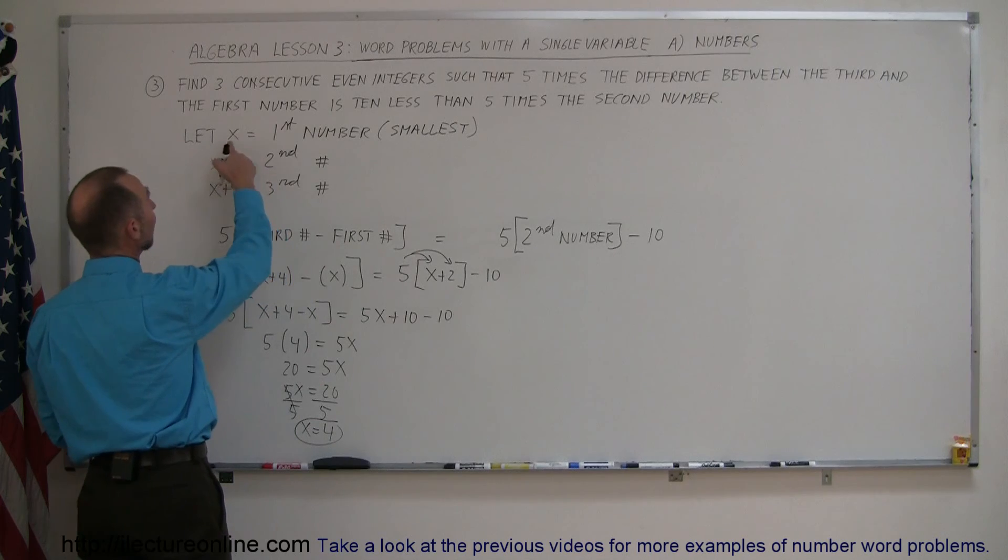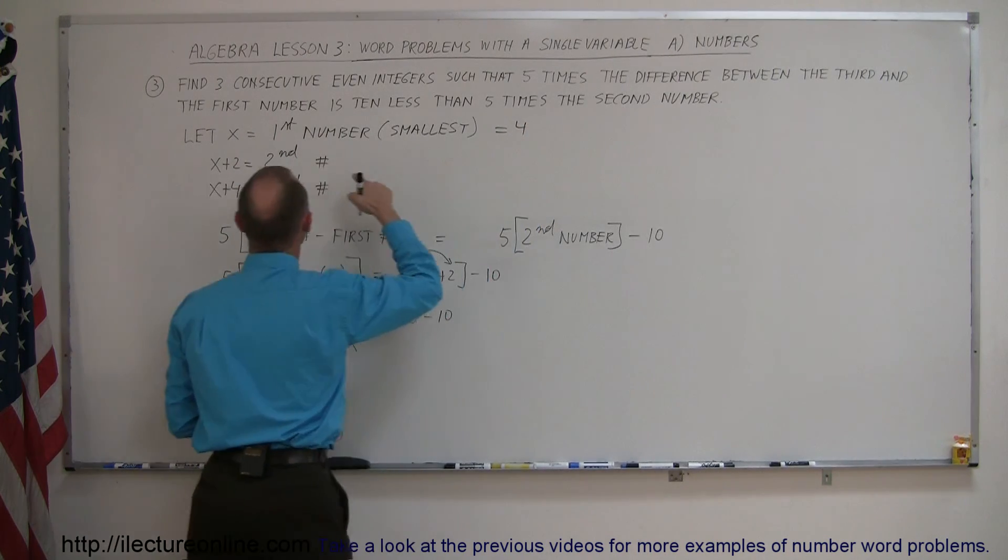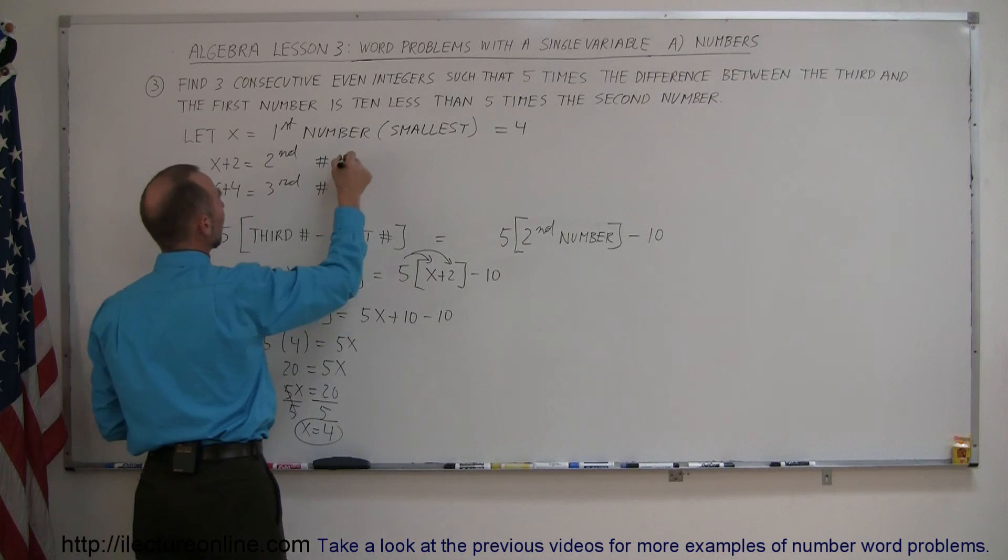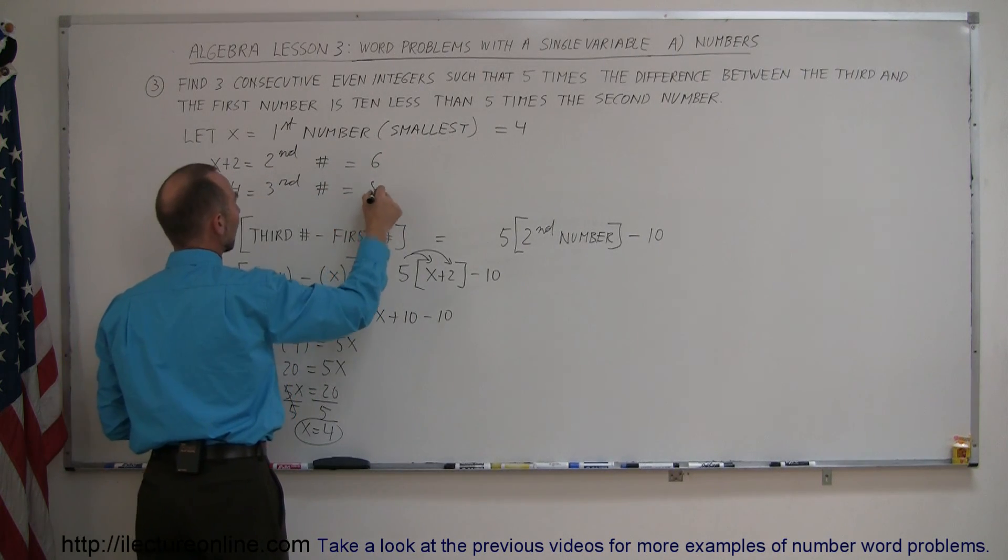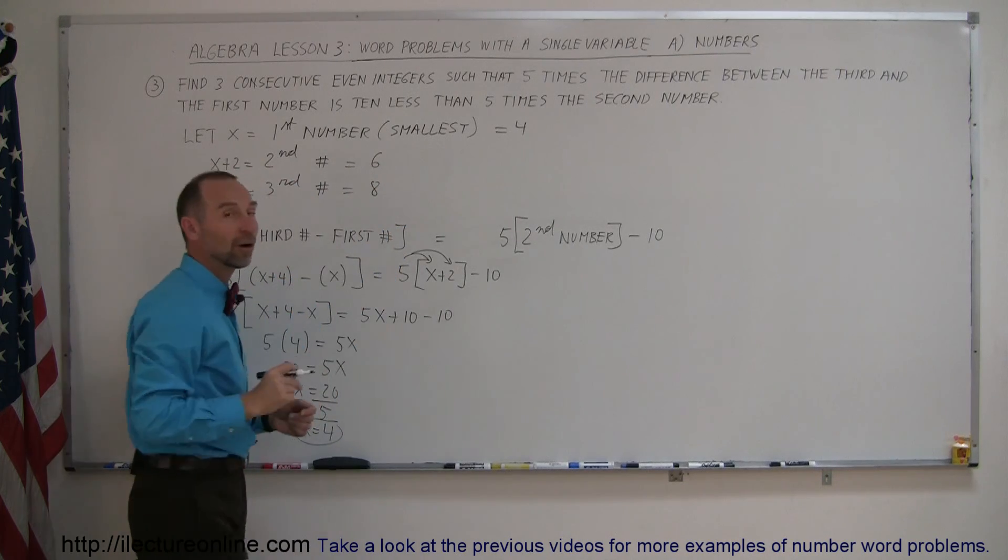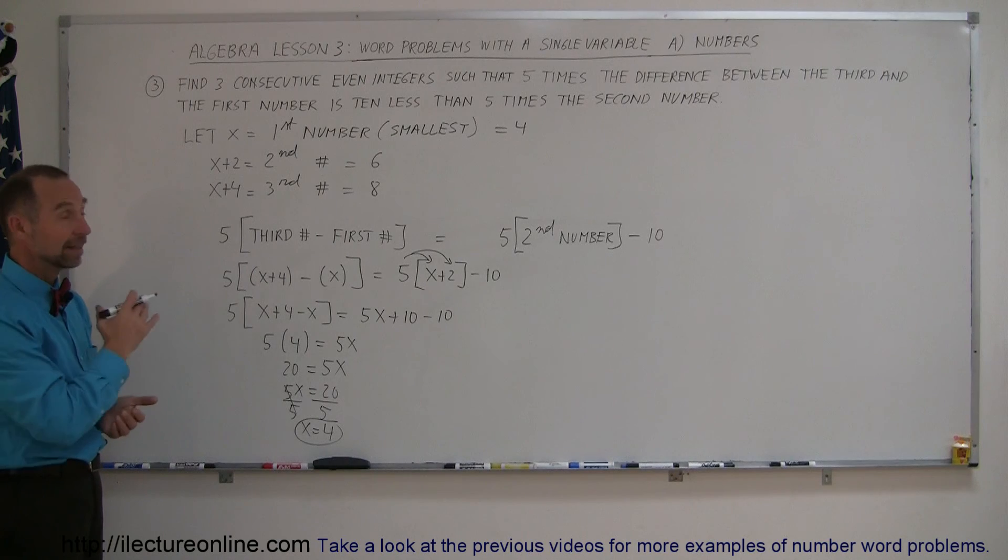And again, up here we said x is equal to the first number, so the smallest is equal to 4. So the second number is 4 plus 2, that means that it's equal to 6. And the third number, 4 plus 4, which is 8. And so 4, 6, and 8 are the three even consecutive integers we were looking for. And that's how you do that problem.